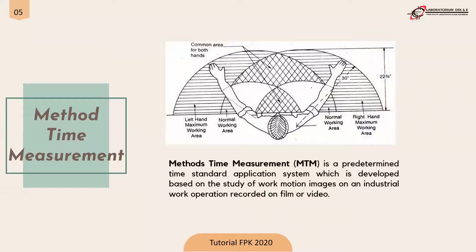Method Time Measurement is a pre-determined time standard application system developed based on study of work motion images on industrial work operations recorded on film or video. From the pictures, there are four working areas: left hand maximum working area (farthest left hand motion coverage, 20 degrees or 22.75 inches), right hand maximum working area, normal working area for normal hand movements, and wide area which is the uncomfortable part for hand movements.